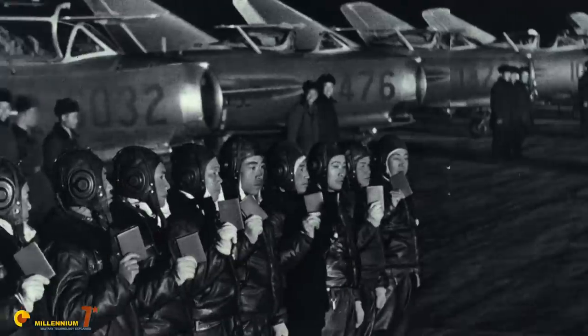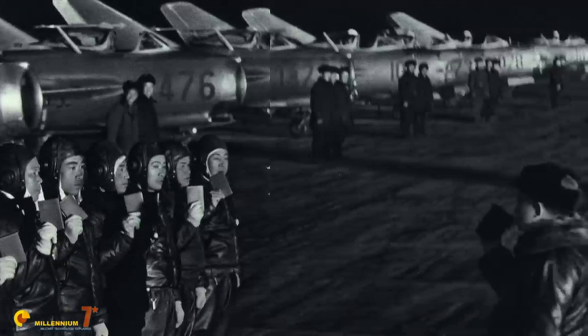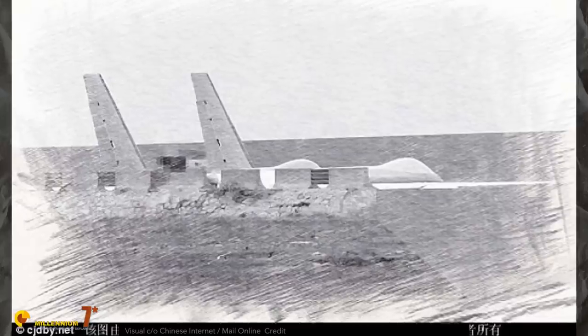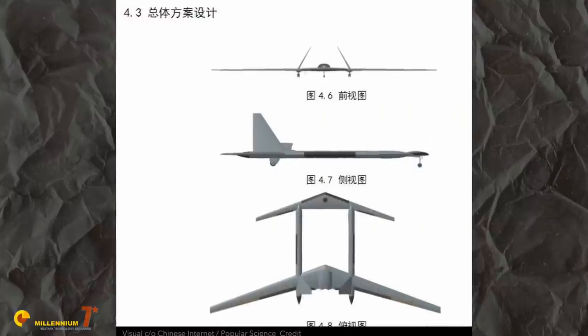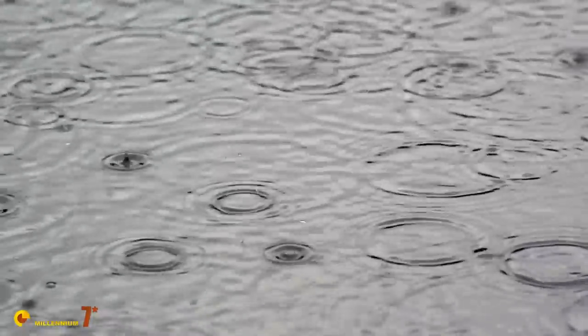The first rumors about Project 973 Divine Eagle by Shenyang Aircraft Corporation emerged in 2012 in a book about Chinese aeronautical history. In May 2015, some pictures and engineering diagrams were leaked on the Chinese internet. The configuration shown at the time was not the final one, but it made waves because it was big and very unusual.